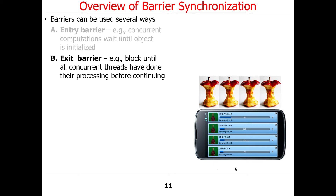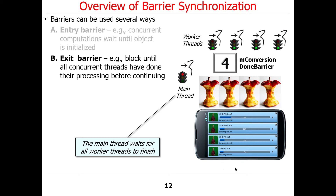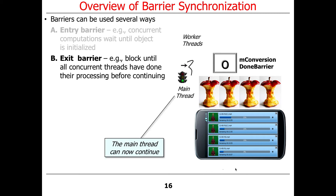Another use of barrier synchronization is as an exit barrier. In this case, you're going to block all the concurrent threads that have finished their processing before you let them continue — and continue could mean shutting down, running again, or doing something else. For example, after starting all the worker threads to process some images, the main thread may want to wait for all workers to finish. We would have another barrier starting with a count of four — one for every worker thread — and the main thread just waits on this barrier until the count drops to zero. As the worker threads complete, they decrement the count, and only when it drops to zero can the main thread continue.